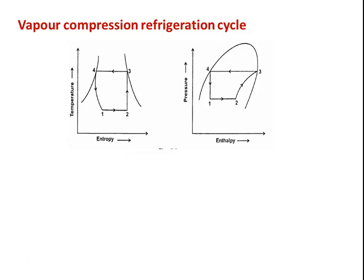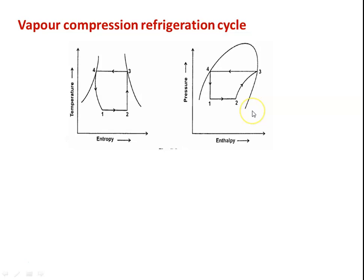We revise once again the Vapor Compression Refrigeration Cycle. The cycle shown here is the basic ideal cycle for vapor compression systems. 1 to 2 is constant pressure evaporation, 2 to 3 is isentropic compression, 3 to 4 is constant pressure condensation, and 4 to 1 is the constant enthalpy throttling device expansion process. The pressure-enthalpy diagram for all four processes is also given on the right side.